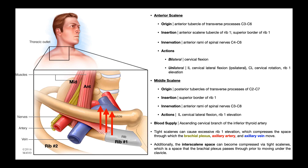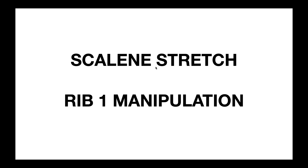So how do you remedy this situation? Two things we'll talk about in more detail in later videos. The first is a simple scalene stretch — if the scalenes are tight, stretch them. Also, sometimes the first rib can actually be hypomobile independent of the scalenes, so it may serve to manipulate or mobilize the first rib so it can move better and doesn't get stuck in a position where it could compress those structures in the costoclavicular space.